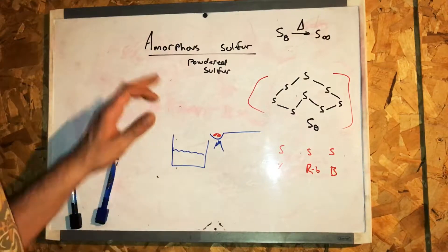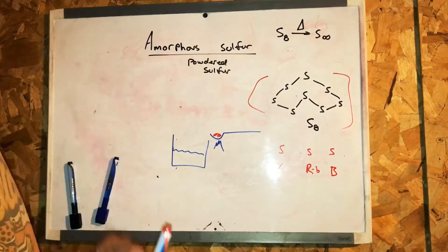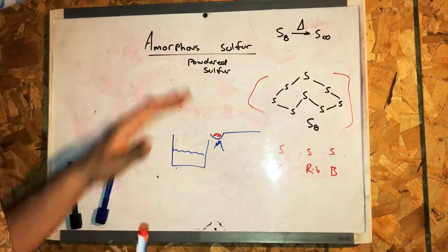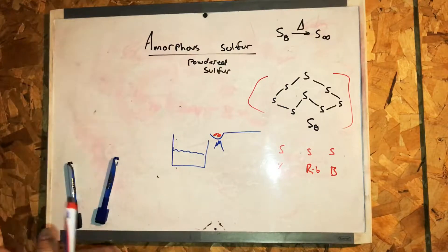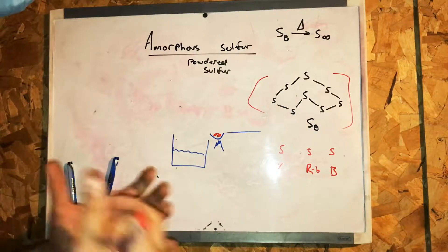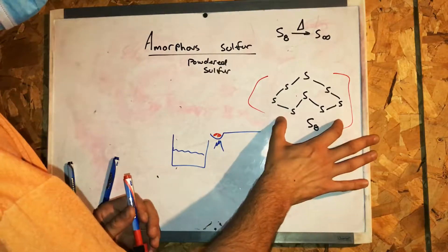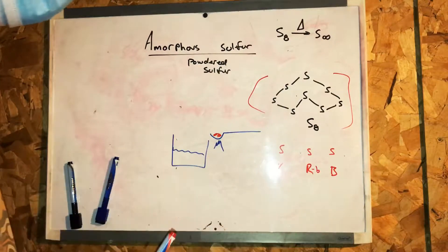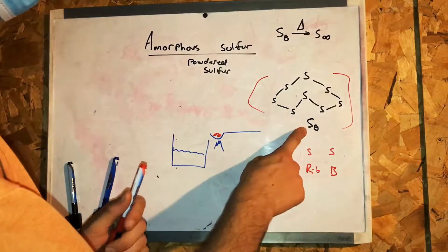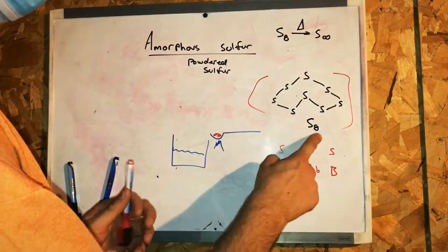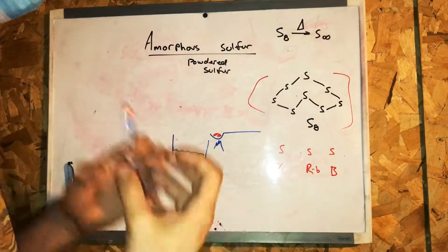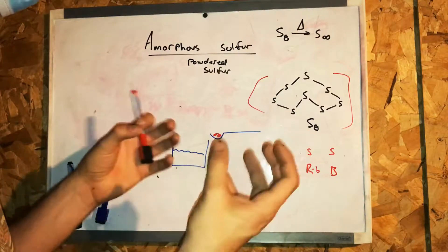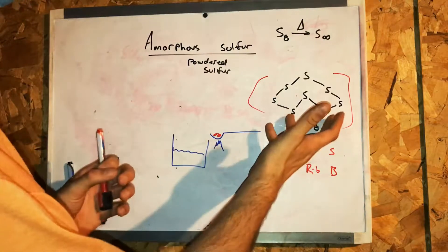I'm going to create amorphous sulfur in the laboratory. I'm going to be using some powdered sulfur. Now sulfur as a molecule appears to look like this — it almost looks like a crown. Sulfur is written S8, so there are eight sulfur atoms all bunched up together like this.